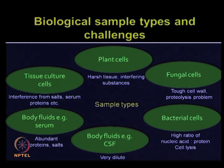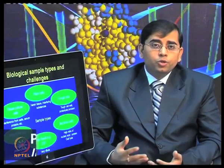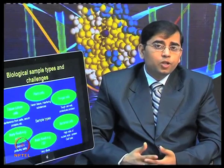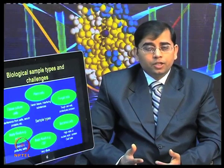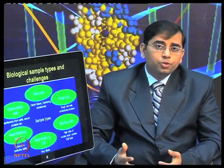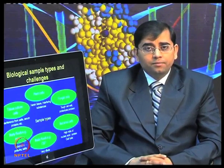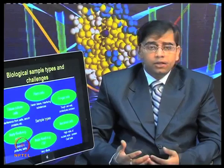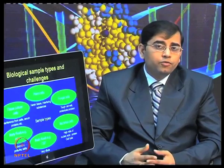If you are interested in plant cells to extract protein, those are very hard tissues and there are various interfering substances present there, such as phenolics and other salts, which you need to remove. Fungal cells such as yeast require breaking open very tough cells, and proteolysis is also a problem. Bacterial cells have a high ratio of nucleic acid to protein and cell lysis is tedious. Body fluids such as cerebrospinal fluid are very dilute, so you need to concentrate your samples. Serum is rich in abundant proteins and salts, so you need to remove those abundant proteins such as serum albumin.